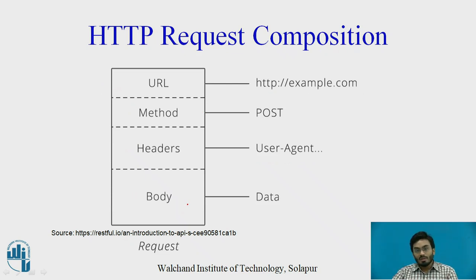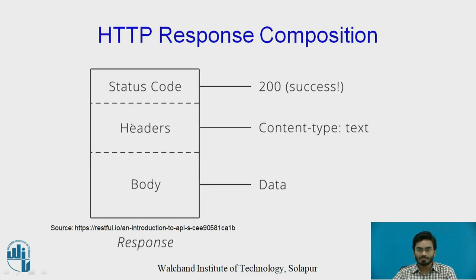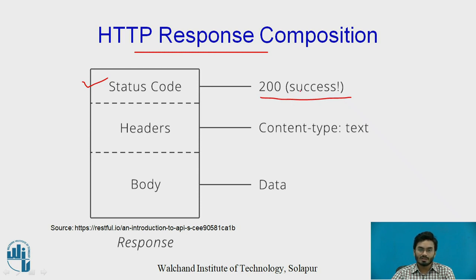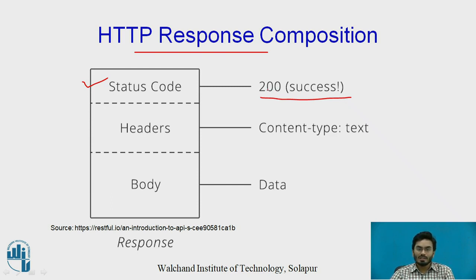Once we have understood the request, let us see what the server is going to respond by looking at the HTTP response composition. Here what we have is the status code. The response posted to the client contains three parts. The first part is the status code — for example, if the user is requesting an IoT image on the Google server and if the server finds a match, then it is going to return a success status code inside the HTTP response. If it doesn't find any match — if that particular image is not available on the web server — then it is going to return a status code called 401. There are a variety of HTTP codes; this status code indicates whether the content is available or matched on the web server.